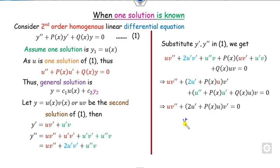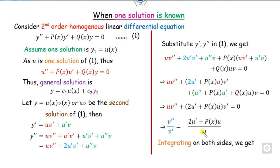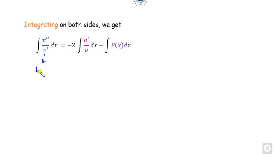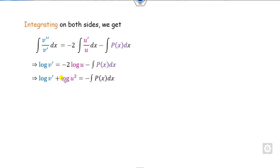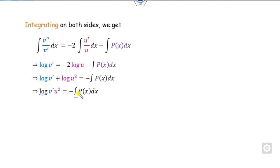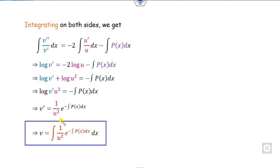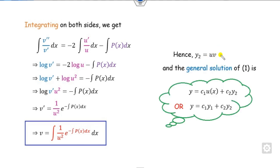Our target is to find the value of v. We can equate and separate the variables. Once we integrate both sides, the left-hand side gives log of v', and the right-hand side involves log of u and so on. The minus 2 on the left can be written as log of u². Taking the logarithm to the exponential side gives us the value of v'. Since v' is dv/dx, we can find v by integrating both sides. This is the formula for v, and hence our second solution y2 is u·v.